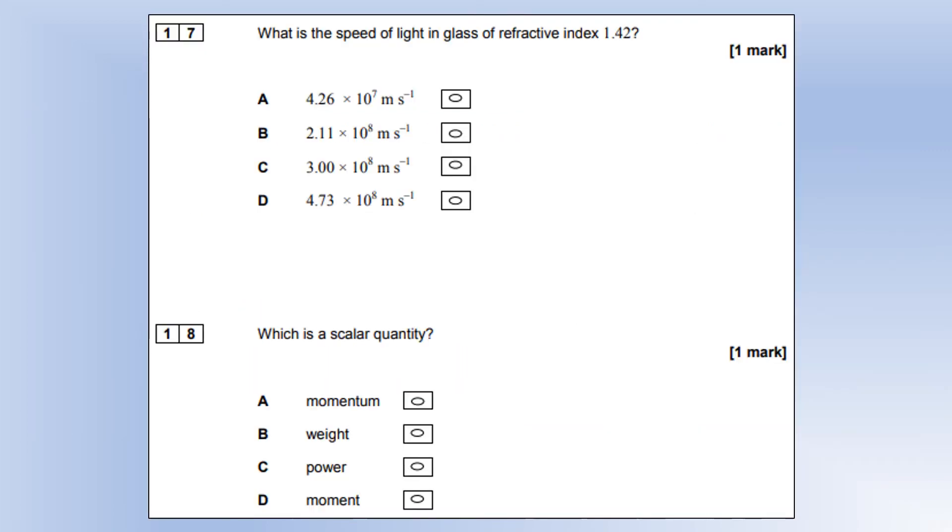What is the speed of light in glass of refractive index 1.42? Refractive index is the speed of light in a vacuum over the speed of light in a substance. Plug the numbers in and we can see the answer is B.